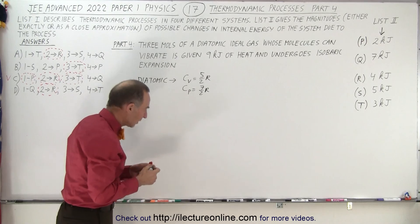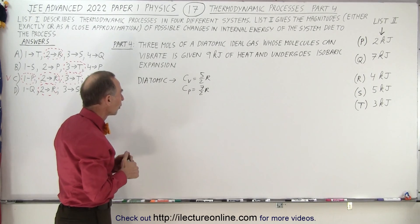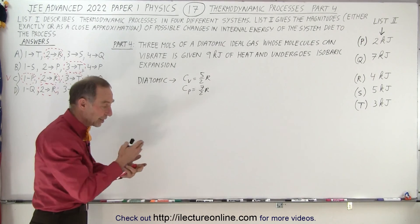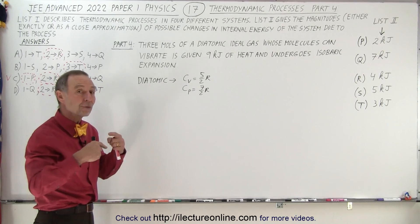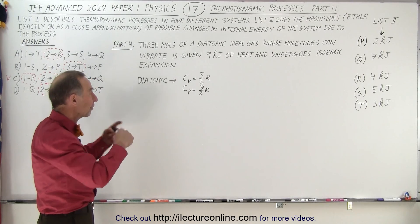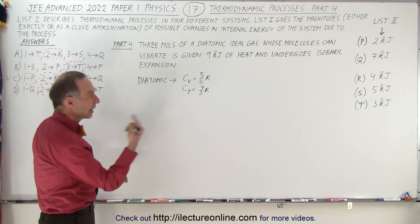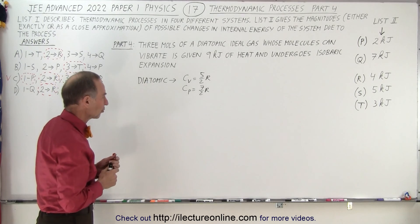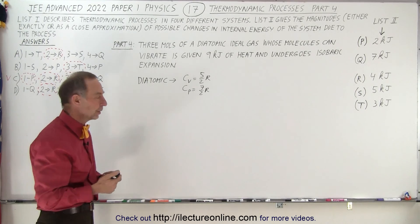Well that's because diatomic molecules not only have three degrees of freedom of motion, they also have two degrees of freedom of rotation. They can rotate in two directions so that gives them C sub V is five over two R.